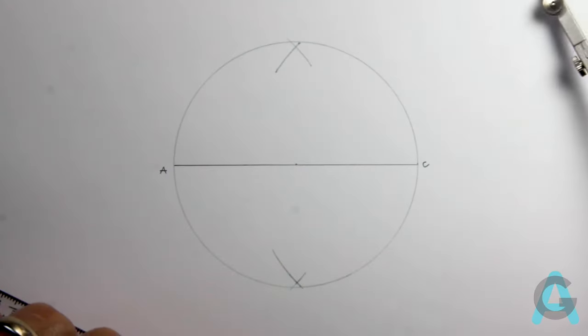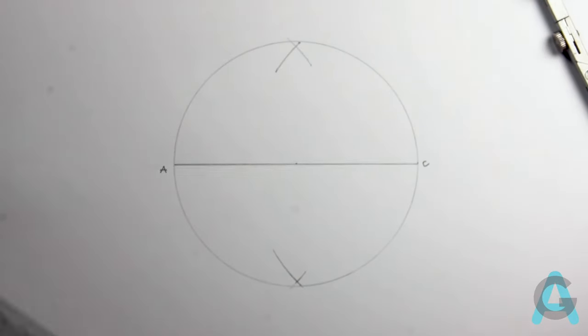Now, we can draw the second diameter that is perpendicular to the first diameter.